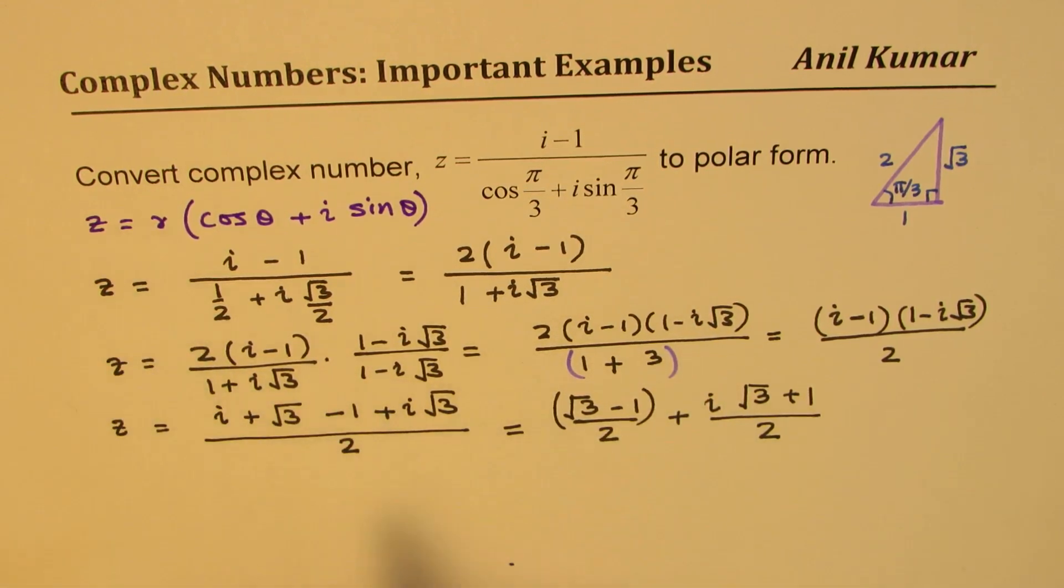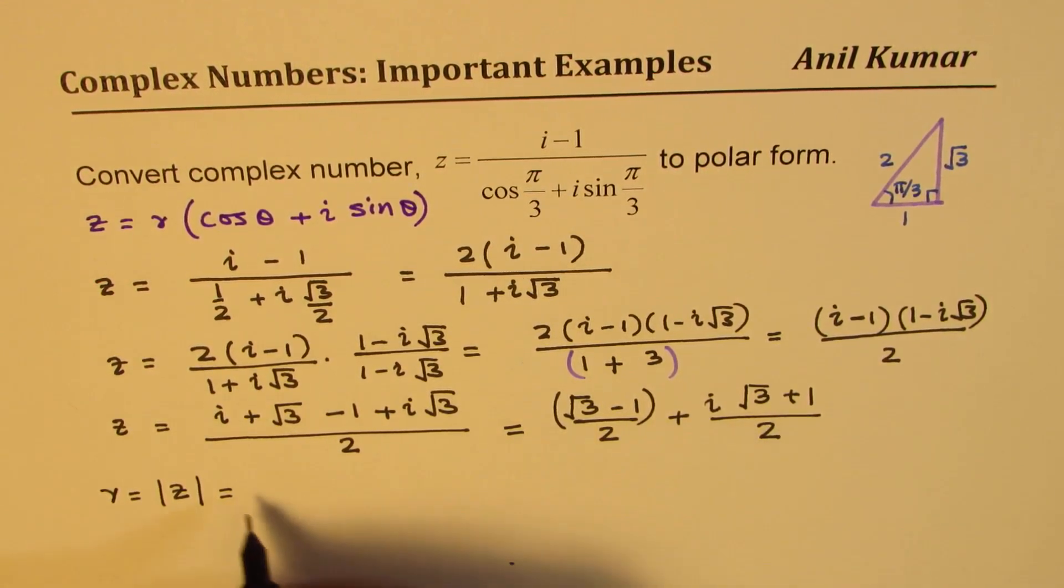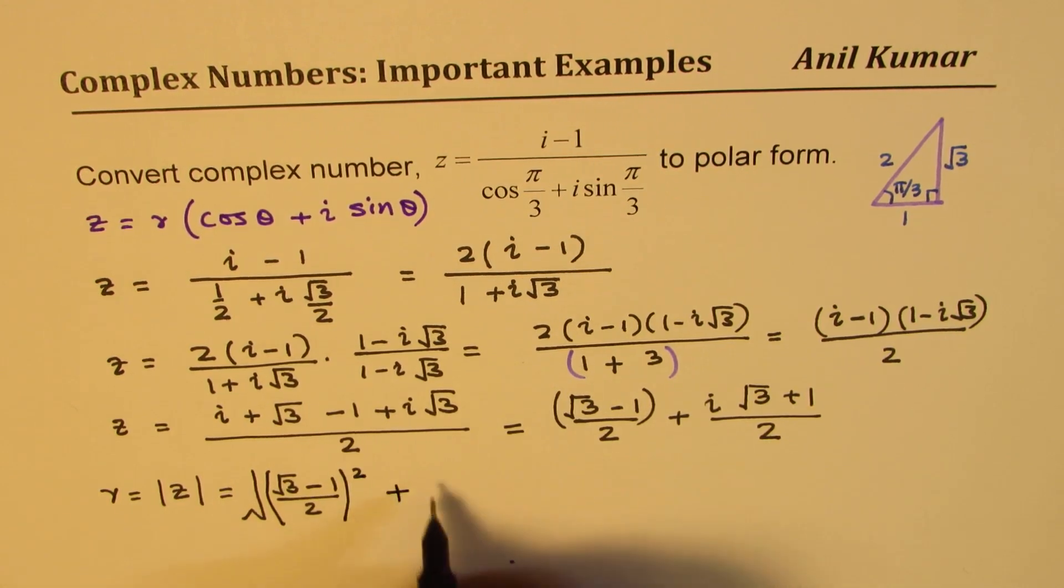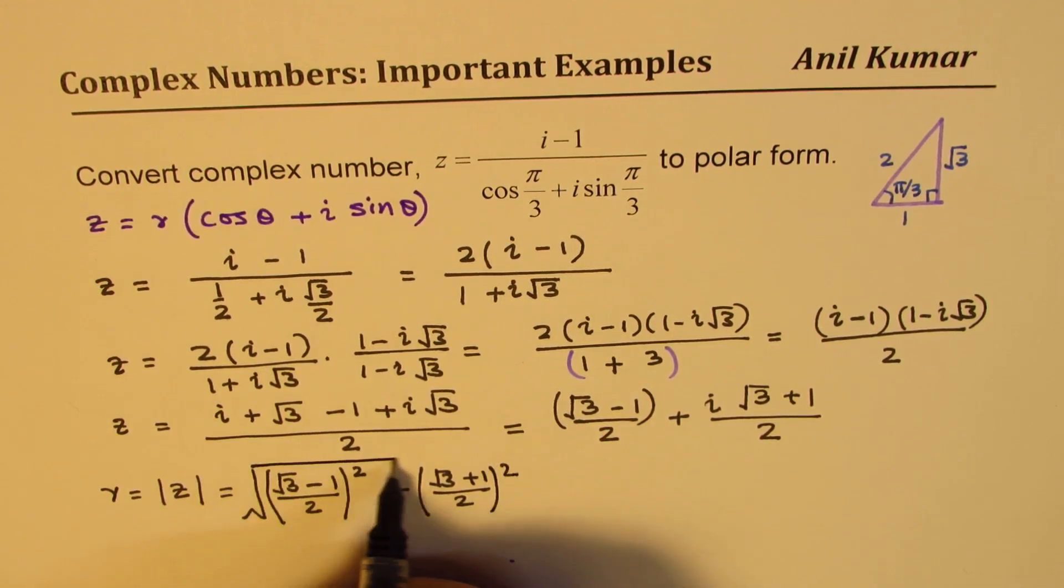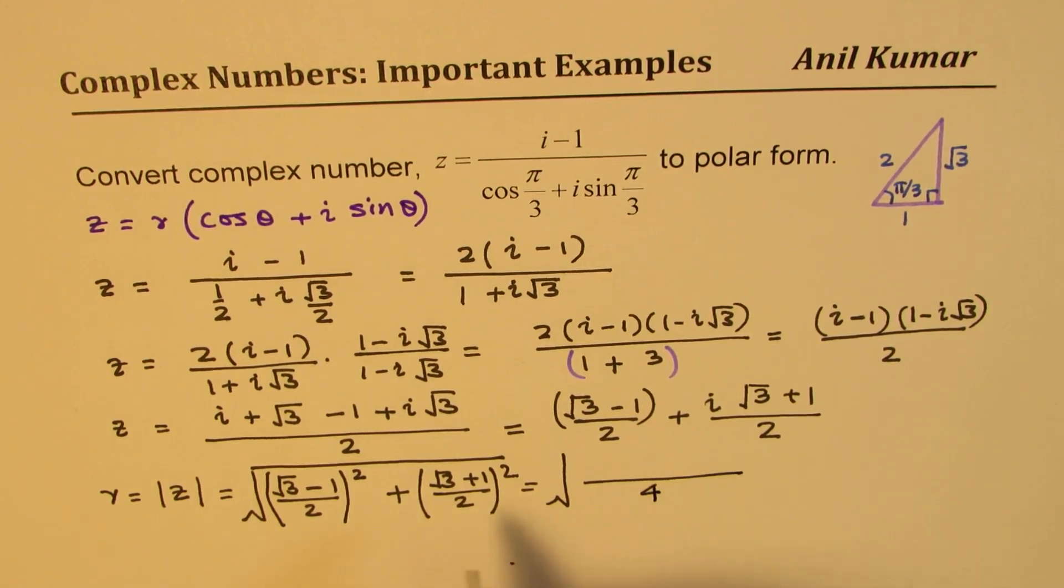To find the magnitude r, r will be equal to the magnitude of this complex number, which will be √(a² + b²). So it will be √[(√3 - 1)/2]² + [(√3 + 1)/2]². So that is equal to, we get 4 in the denominator, and in the numerator a² plus b², these terms will cancel out. So what we get here is, let's expand this.